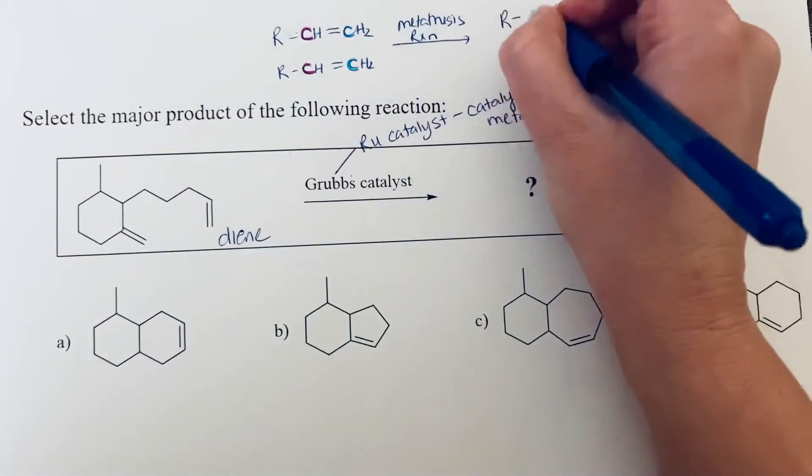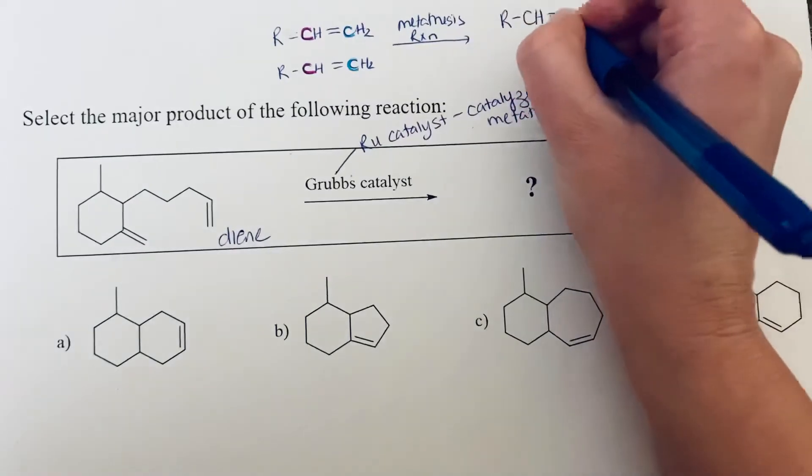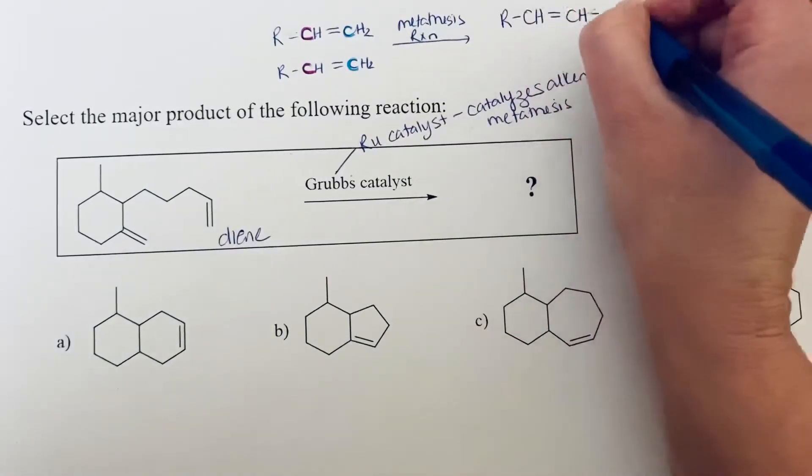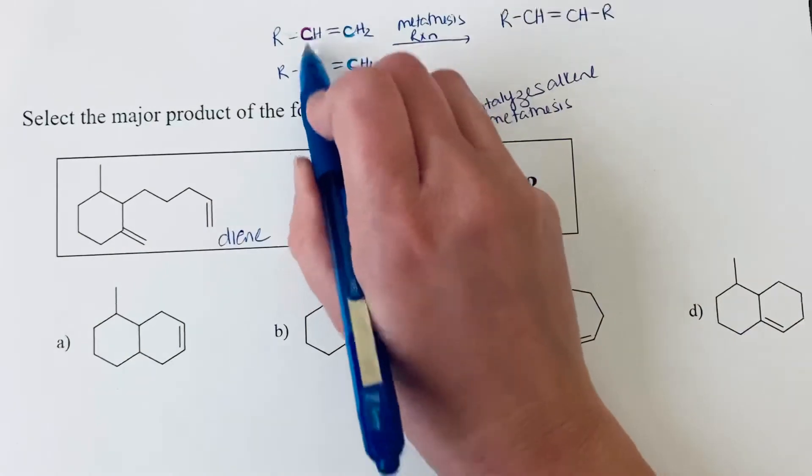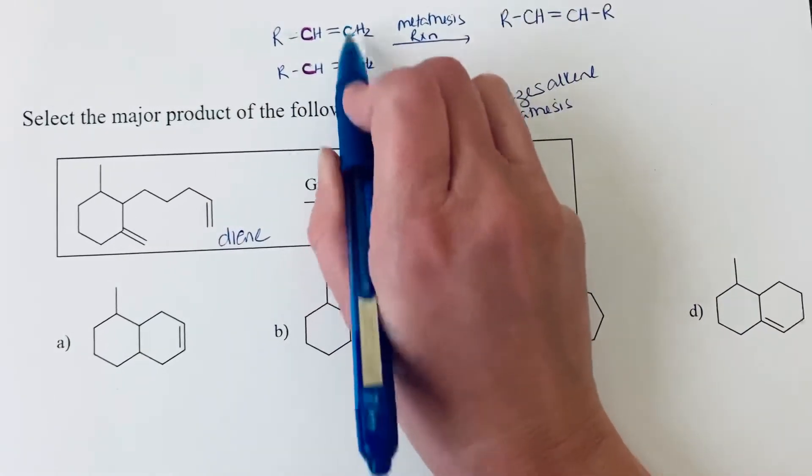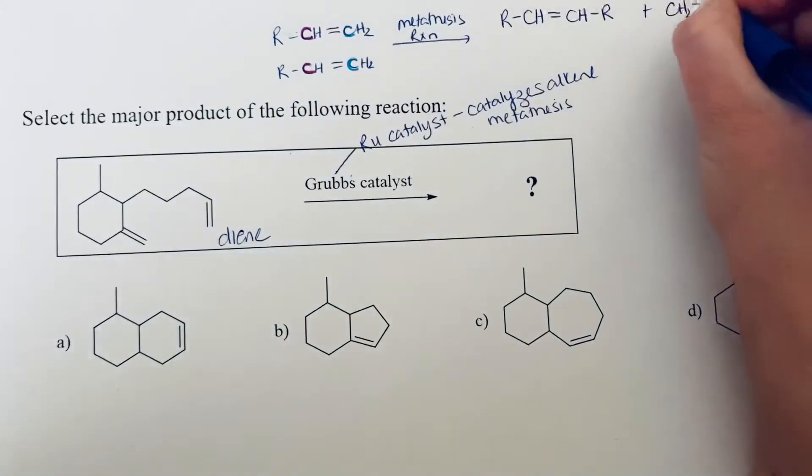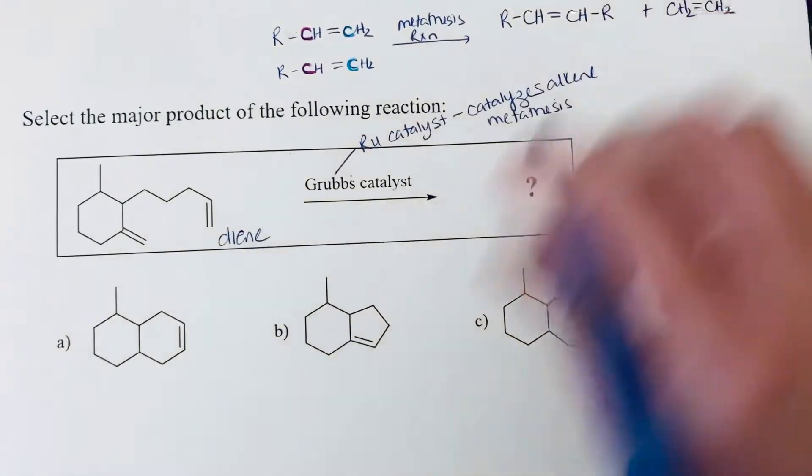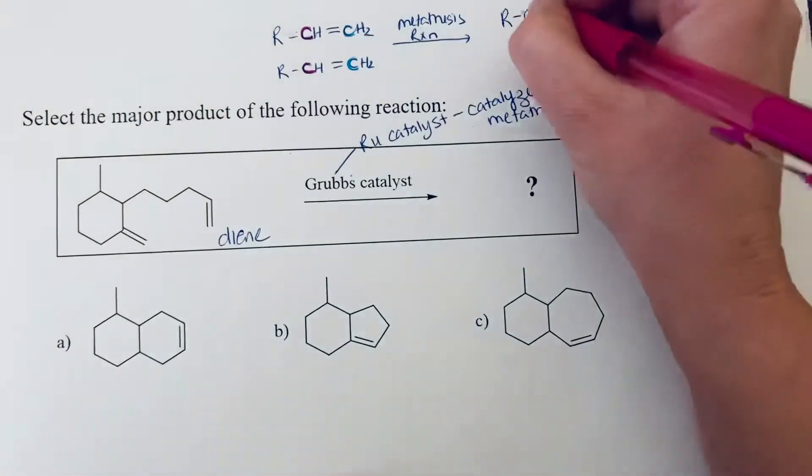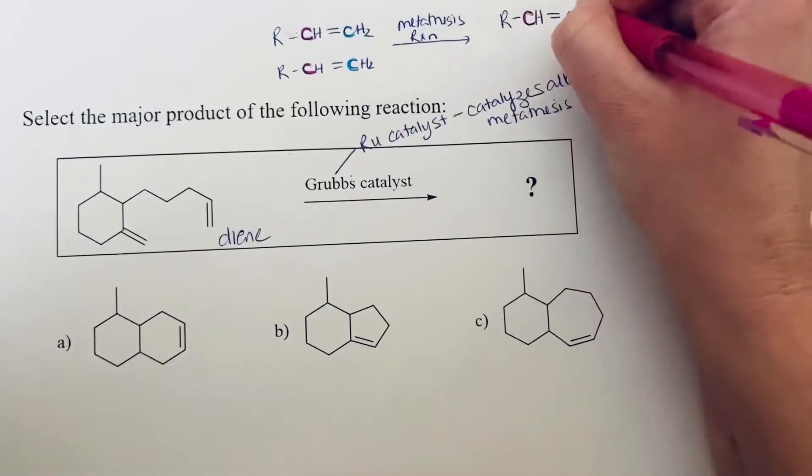So we would have the R, CH, and this is going to be bound to the other CH and the R. So we brought these two pieces together. And then we also bring these two pieces together. So I'm going to highlight these carbons again so we can see where they are, where they're coming from.